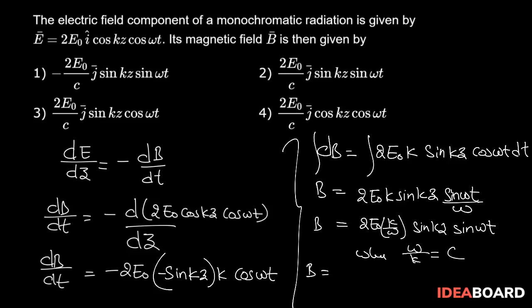So magnetic field B will become 2E₀/c, and the direction of magnetic field is along j cap times sin kz times sin ωt. So the right answer for the given question is option 2.